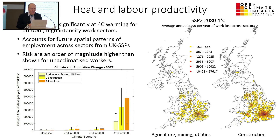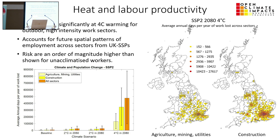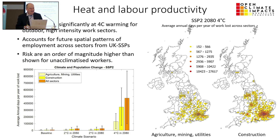In terms of heat and labour productivity, with acclimatization taken into effect, it's really a problem that emerges only after 4 degrees of warming. It's mainly a problem in England, following the patterns seen in other slides. If acclimatization didn't occur, we would get bigger impacts.